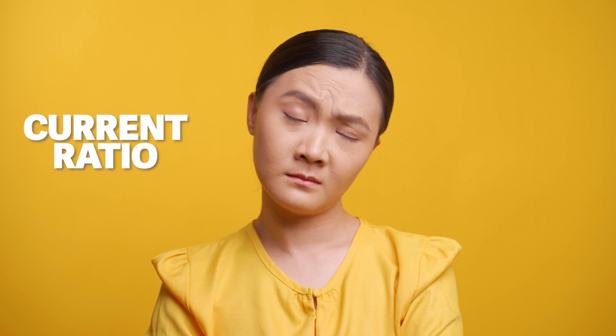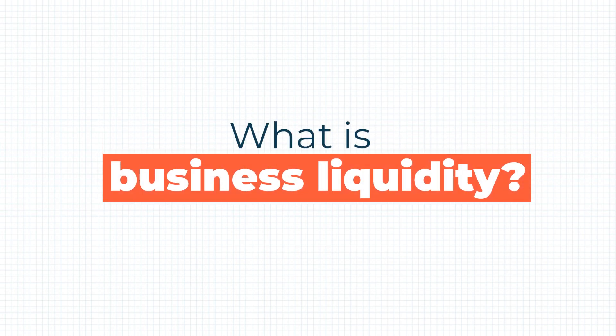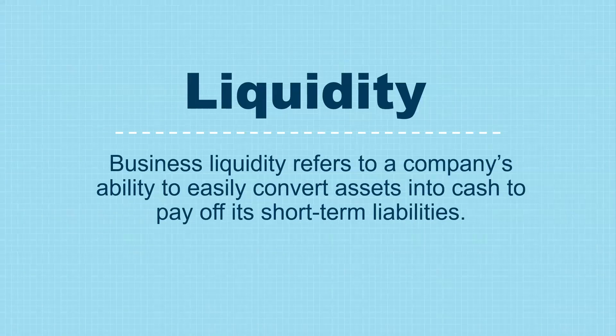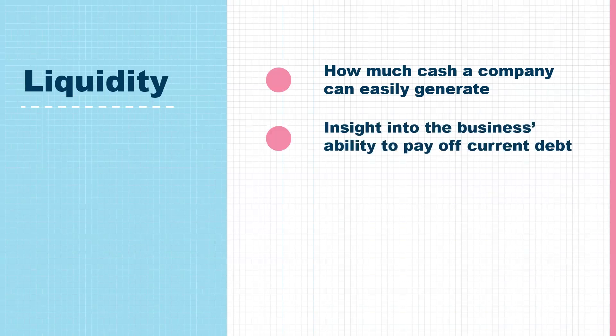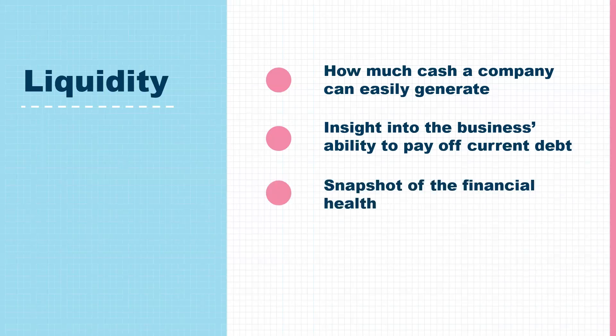Are you confused by terms like liquidity, current ratio, or quick ratio? Just know that you are not alone. Let me break this down and simplify these concepts for you. Business liquidity refers to a company's ability to easily convert assets into cash to pay off its short-term liabilities. Liquidity is the measure of how much cash a company can easily generate. It's an insight into their ability to pay off their current debt. Ultimately, it's a snapshot of the financial health of the business.